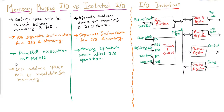In Memory Mapped IO there are no specific input or output instructions; everything is implemented using memory reference instructions only. The load and store instructions used for reading and writing memory content can equally be used to input and output data from the IO register. In most computer architectures there is one common bus to transfer information between memory or IO and the CPU, and most architectures prefer Memory Mapped IO because it provides the flexibility to use the same instruction set for input/output operations.